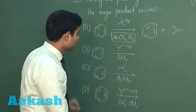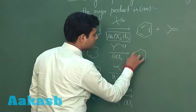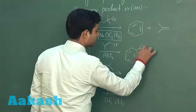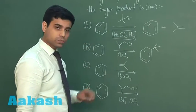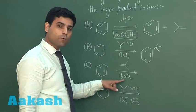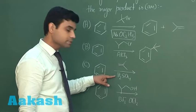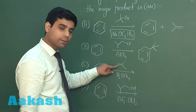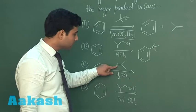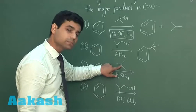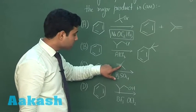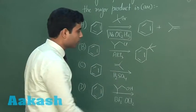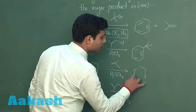Therefore, we will get tertiary butyl benzene in this case. In the third case, we have H2SO4 with an alkene. It will give us a proton, and the proton will attack on the carbon, resulting in the formation of a carbocation at that position. This carbocation will further attack on the benzene ring, resulting in the formation of tertiary butyl benzene.